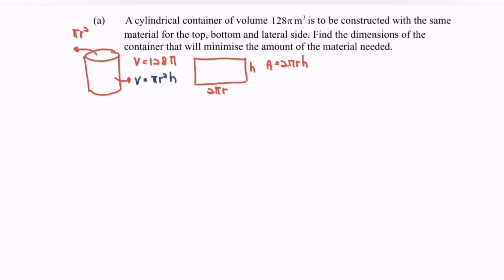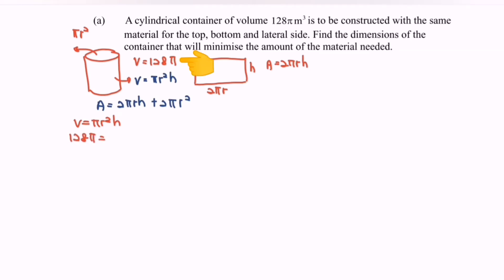Step one: write the formula for the total area. A equals 2πrh for the lateral side, plus 2πr² for the top and bottom. Next, we use the volume formula to replace h. We know V = πr²h, and given the situation, 128π = πr²h.